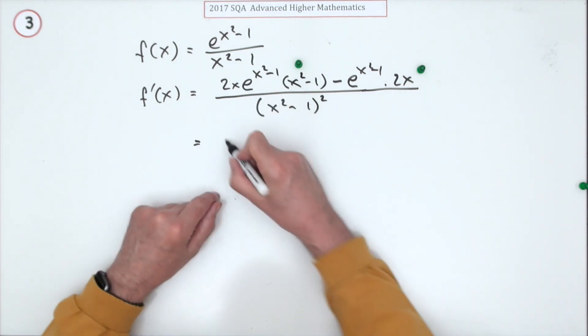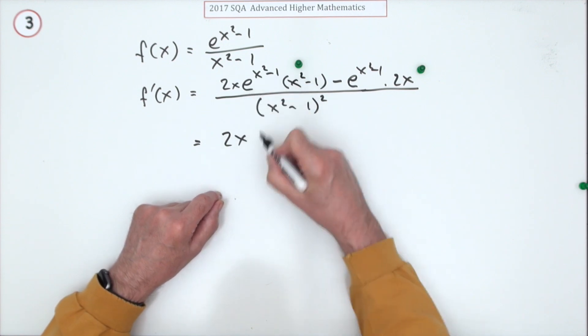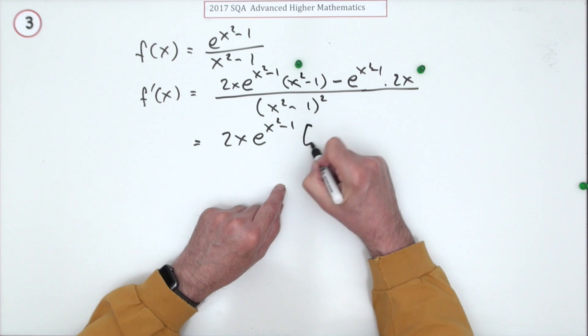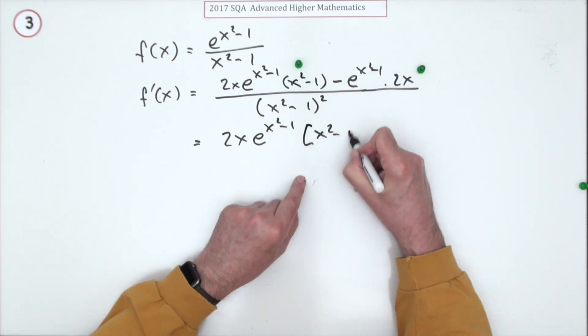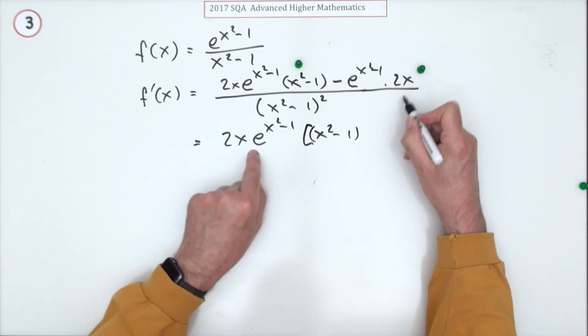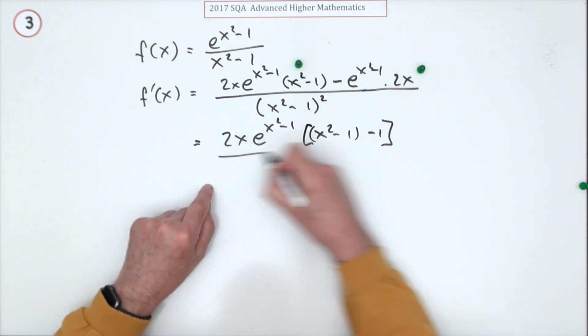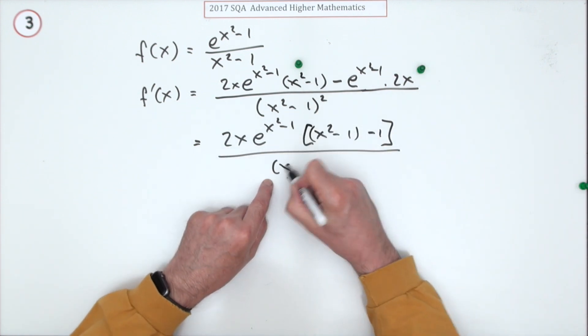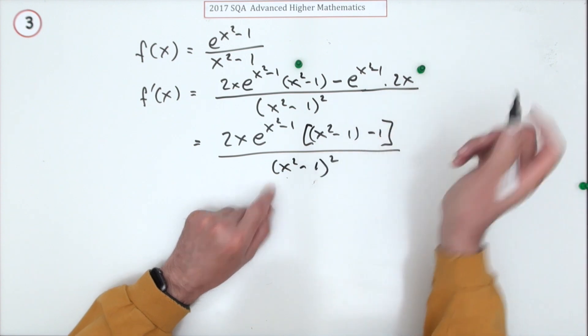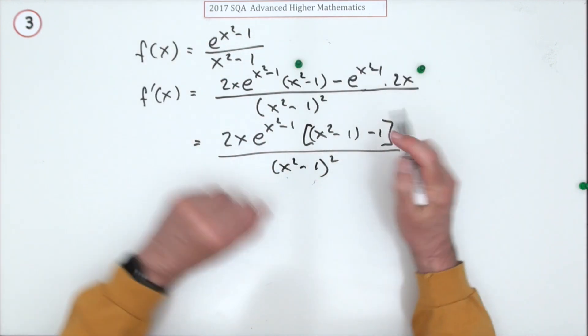Well, there's loads of things there. There's a 2x in common, there's an e^(x² - 1), and that leaves you another (x² - 1). So minus one over (x² - 1) squared. That's what the substitution would have done - saved you writing these. You can count up how many times you've written x² - 1.